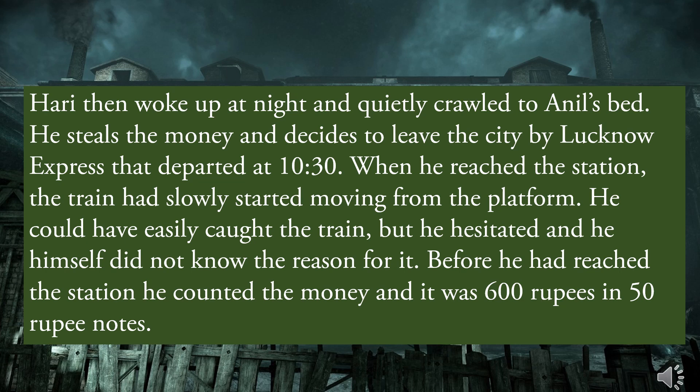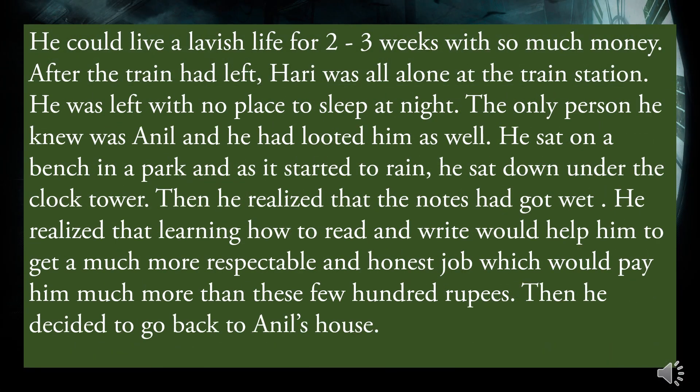He decided to leave the city by the Lucknow Express that departed at 10:30. When he reached the station, the train had slowly started moving from the platform. He could have easily caught the train but he hesitated, and he himself did not know the reason. Before he had reached the station, he counted the money — it was 600 rupees in 50-rupee notes. He could live a lavish life for 2-3 weeks with so much money. After the train had left, Harry was all alone at the station with no place to sleep. The only person he knew was Anil, and he had looted him as well. He sat on a bench in the park and as it started to rain, sat down under the clock tower.